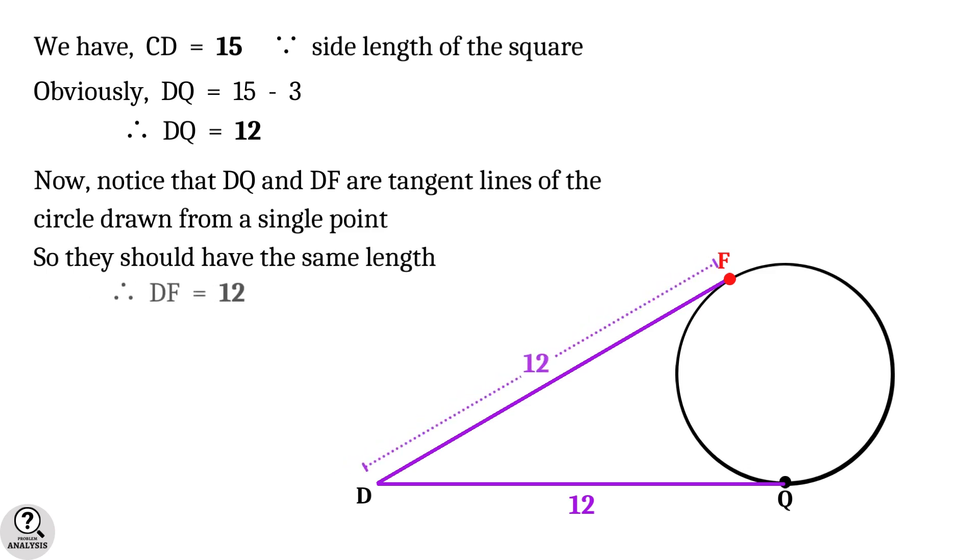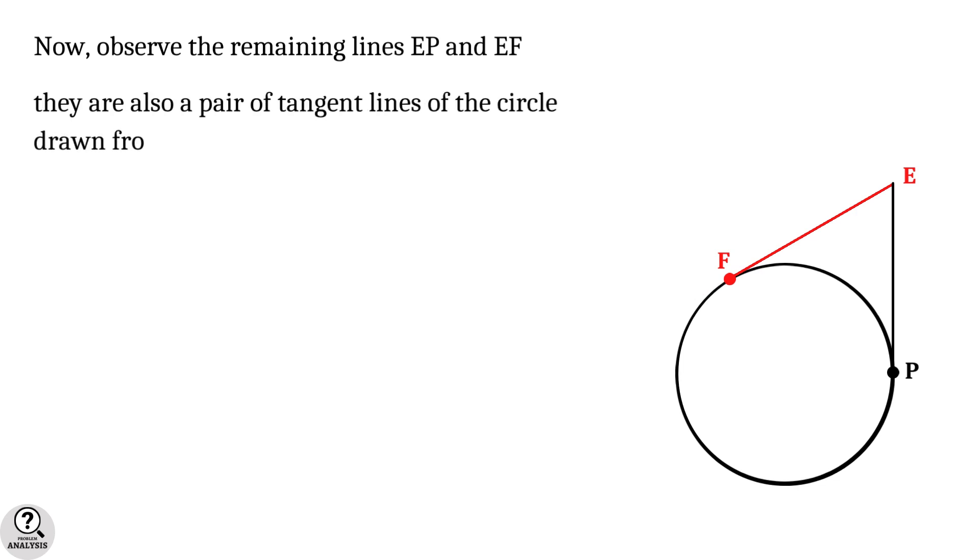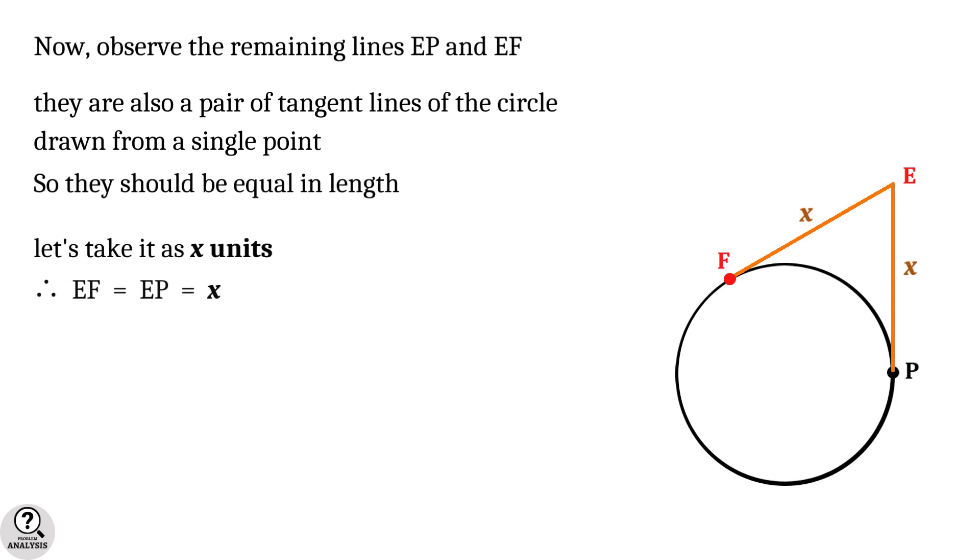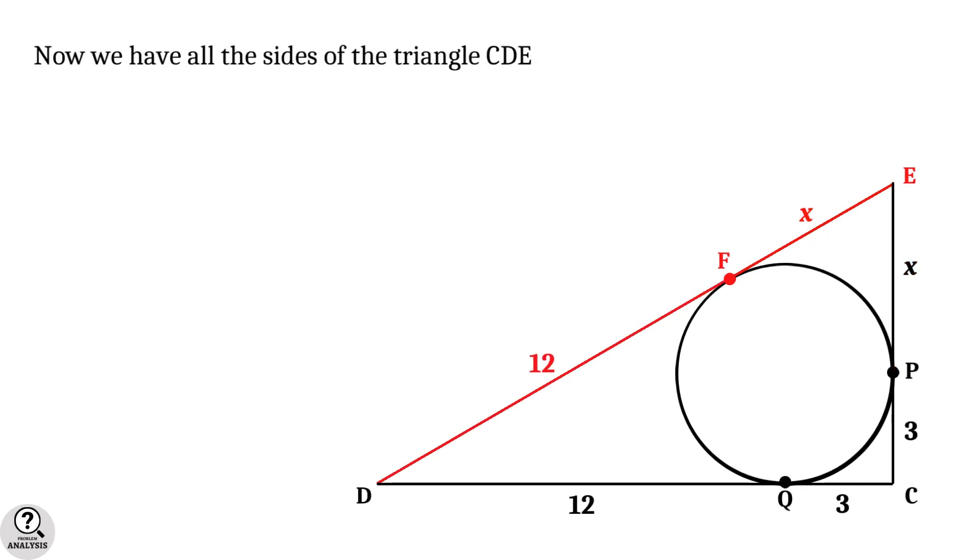And therefore DF equal to 12. The same argument can be applied to the lines EP and EF because they are also a pair of tangent lines to the circle from a single point. So they should be equal in length. Let's take this length as X units. That is EF equal to EP equal to X units.